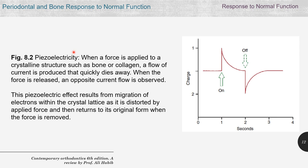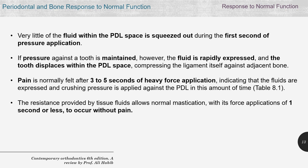An important characteristic of piezoelectric signals is that when you apply force to any crystalline structure like bone or collagen, a flow of current is produced that starts and then quickly dies. When you remove the pressure, another signal is generated in the opposite direction. Upon one application and removal of force, you get two signals: the first displaces electrons, and the second occurs as the electrons return to their original position.